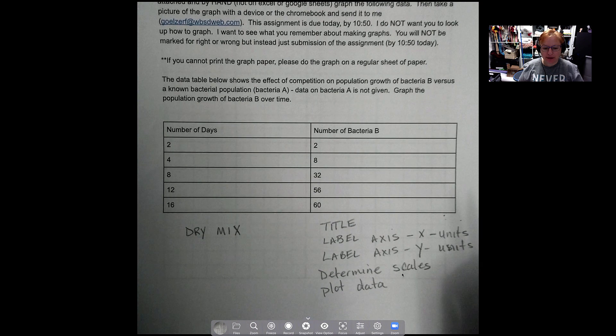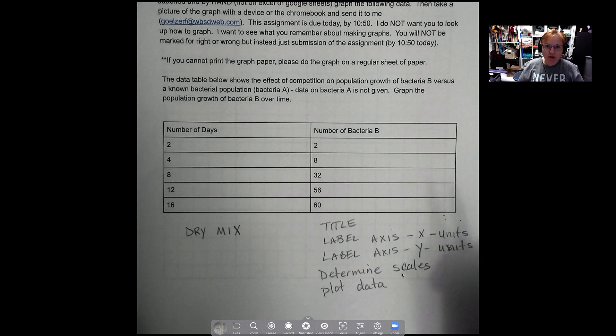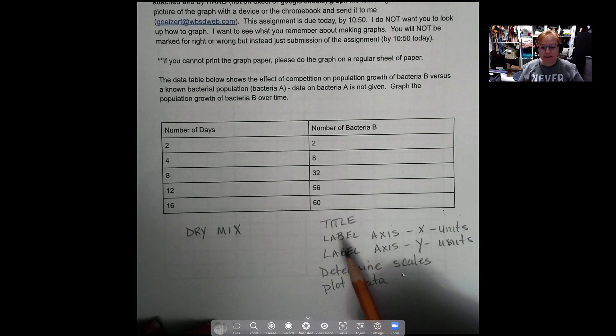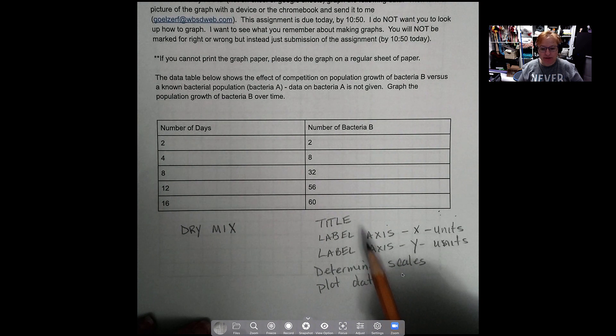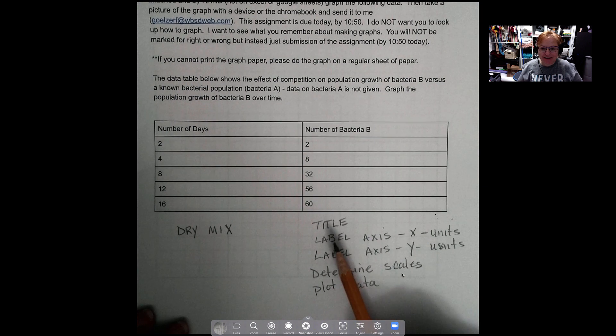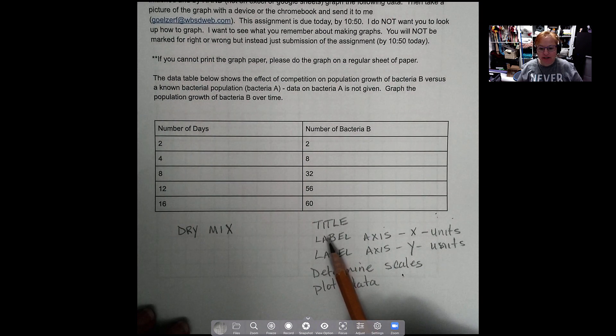We're kind of all starting in the same place. When you go through to make a graph, the graph has to have certain components. Every graph will have certain components. So we need to make a title, obviously, or maybe not obviously because some of you forgot it, so that's all right.